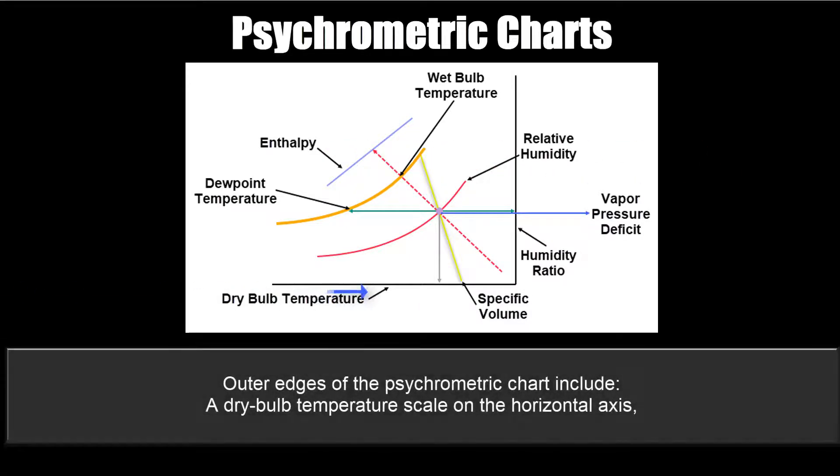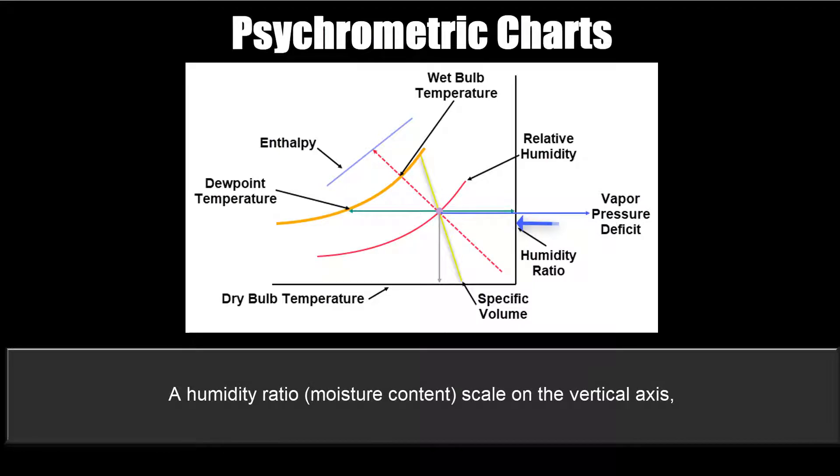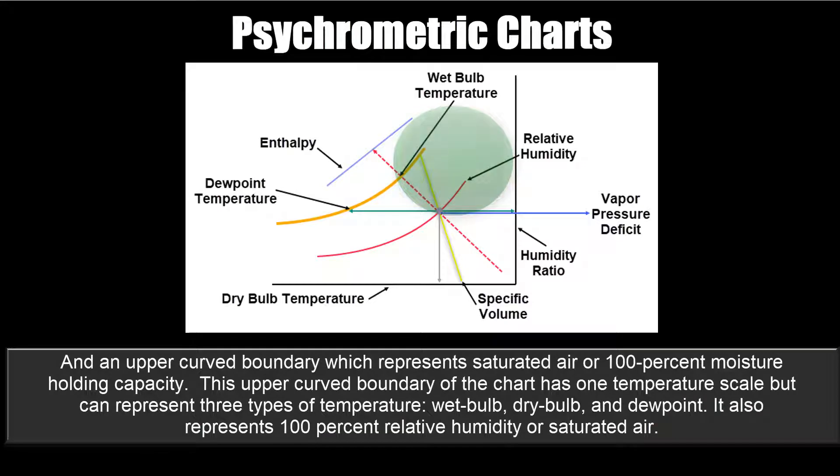Outer edges of the psychrometric chart include a dry bulb temperature scale on the horizontal axis, a humidity ratio scale on the vertical axis, and an upper curve boundary which represents saturated air or 100% moisture holding capacity.